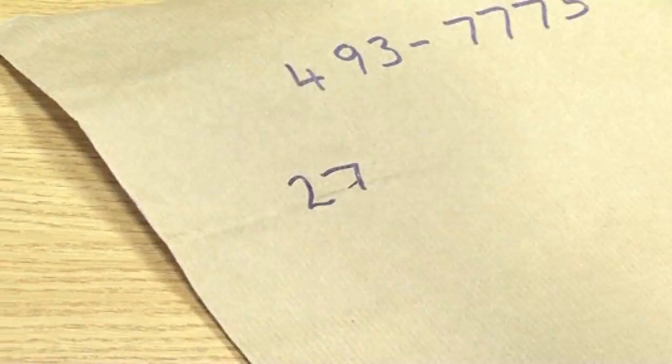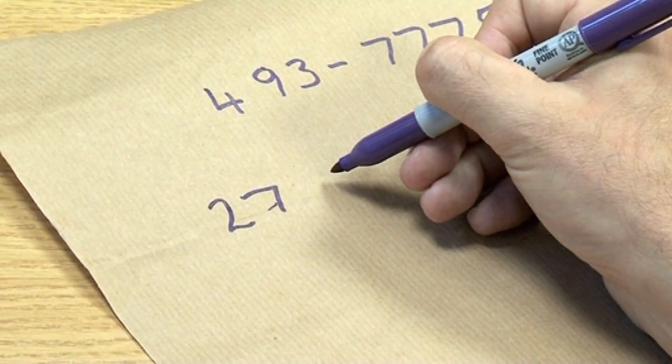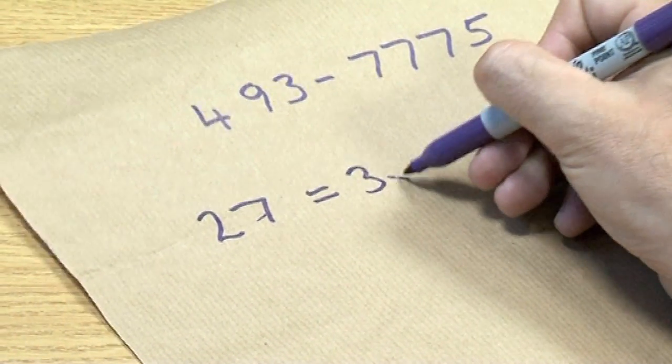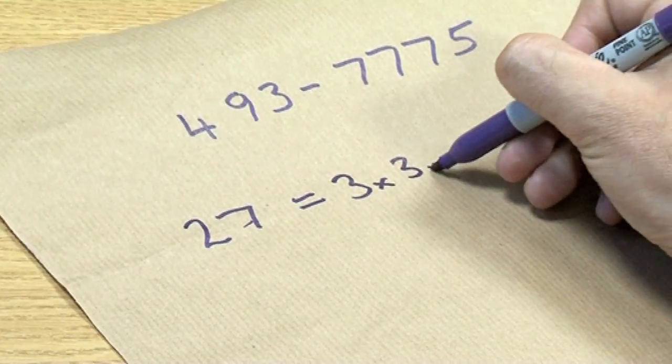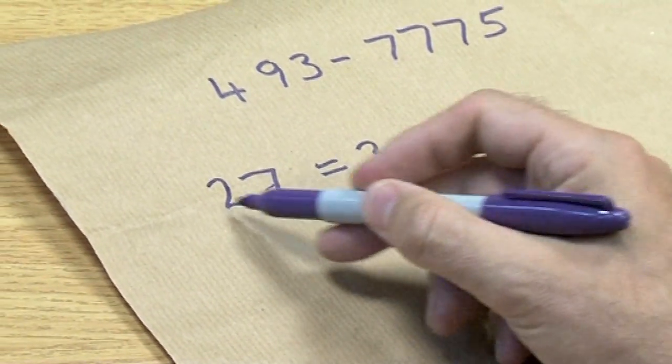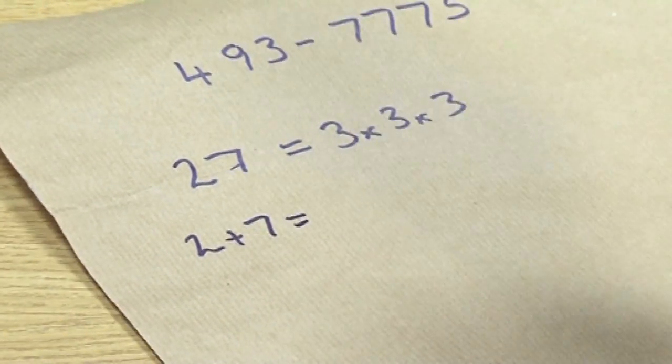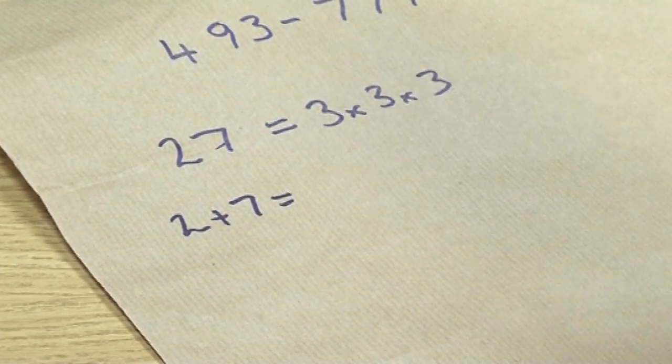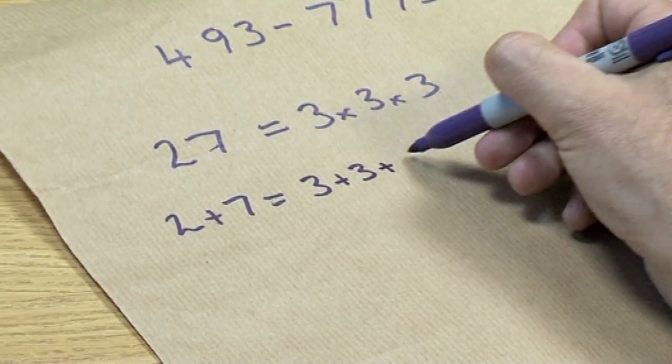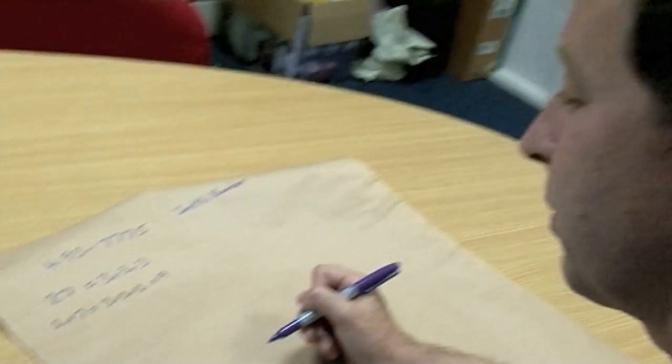27 is a Smith number. Well, first of all, let me just write out the prime factors of 27. So 27 can be written in the following way: 3 times 3 times 3. OK? Now let me do the following. Add these two numbers together for 27, 2 plus 7. And you'll notice that that's equal to the sum of the prime factors, 3 plus 3 plus 3, which equals 9. And that's what makes up a Smith number.